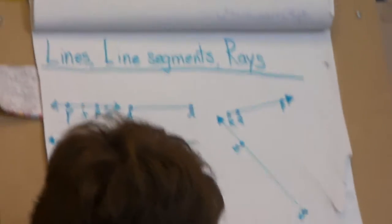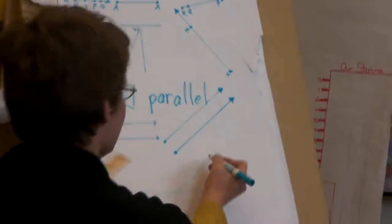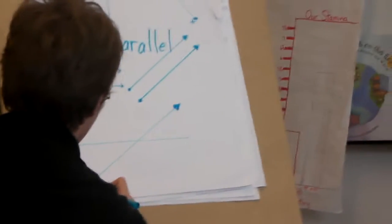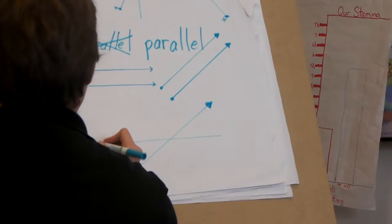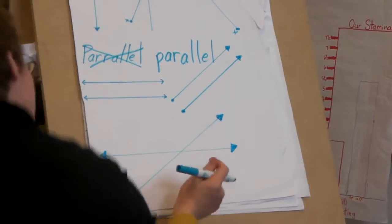Raise your hand if you know what this would be. Let's put some arrows on the ends here. These are not parallel lines. What sort of lines are these?